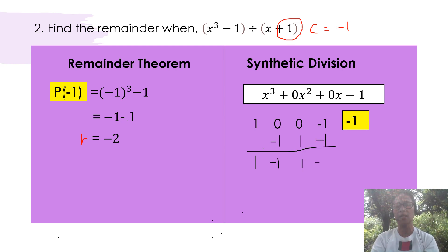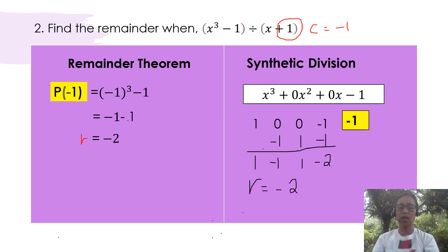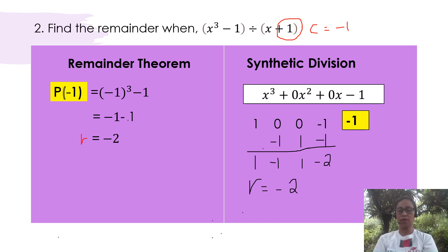So our remainder, which is the last digit in the third row, is negative 2. So by checking using synthetic division, the value that we derived using the remainder theorem is correct.